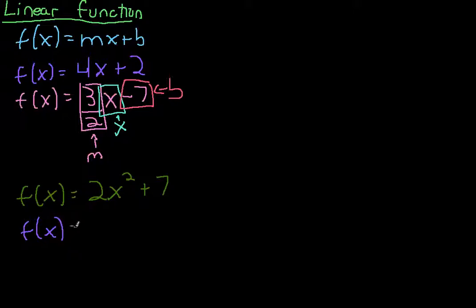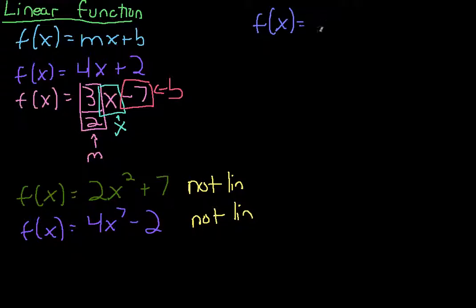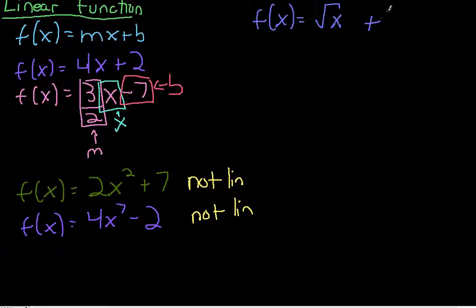So f of x equals 4x to the 7th minus 2 would also not be a linear function. What else could not be a linear function? Well, maybe something that's like the square root of x. So maybe we had f of x equals the square root of x plus 3. That would also not be linear because the square root of x is not x.